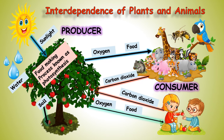I believe this complete circle is clear to you all. Plants are dependent on animals for carbon dioxide, which is essential for making food. And animals are dependent on plants because they get oxygen and food for their survival.